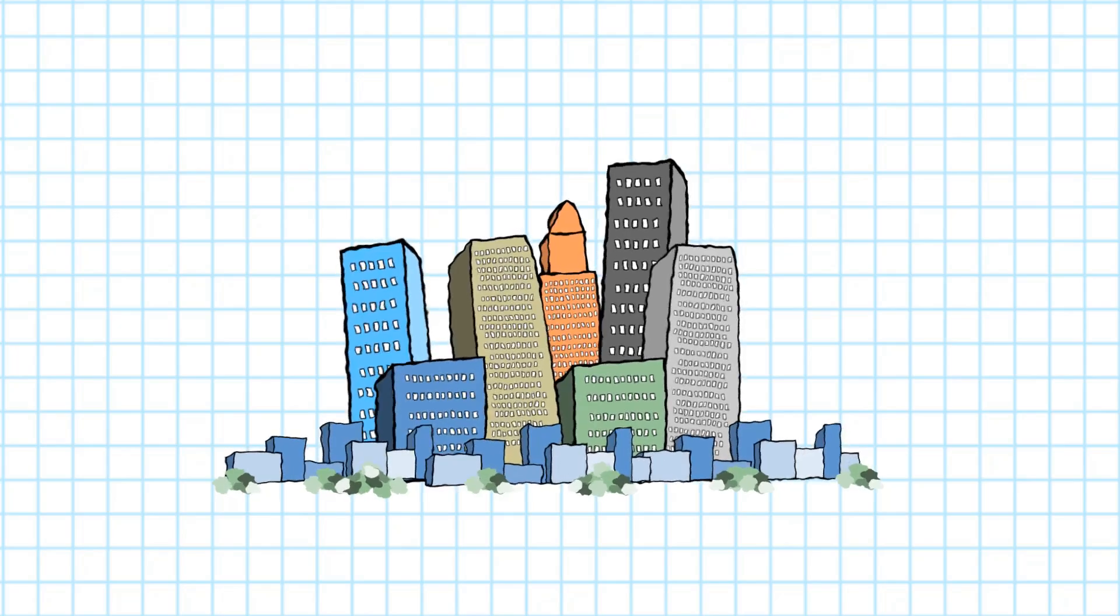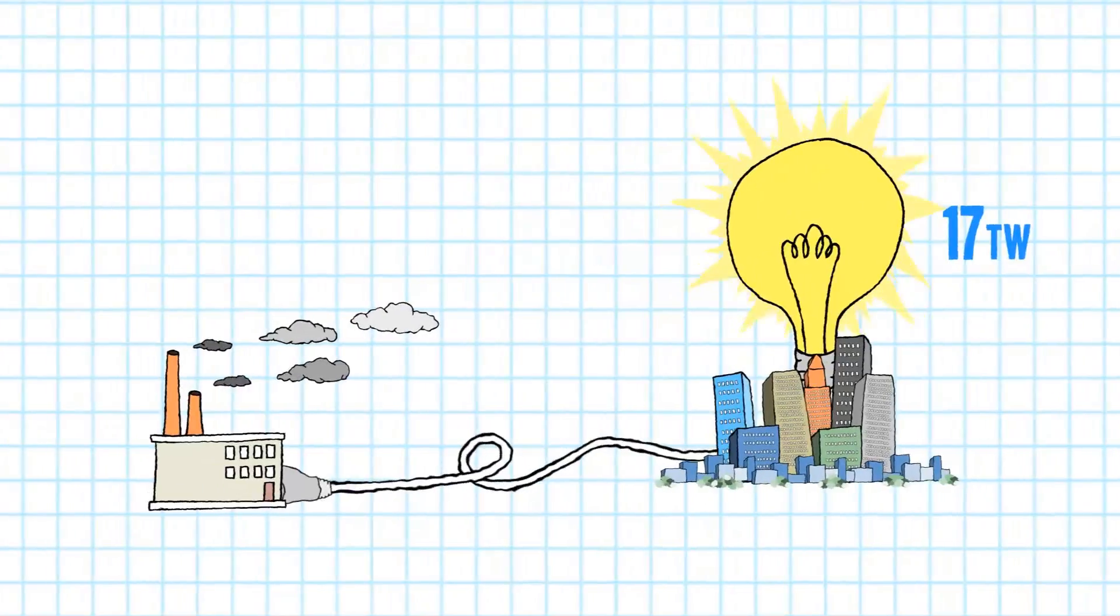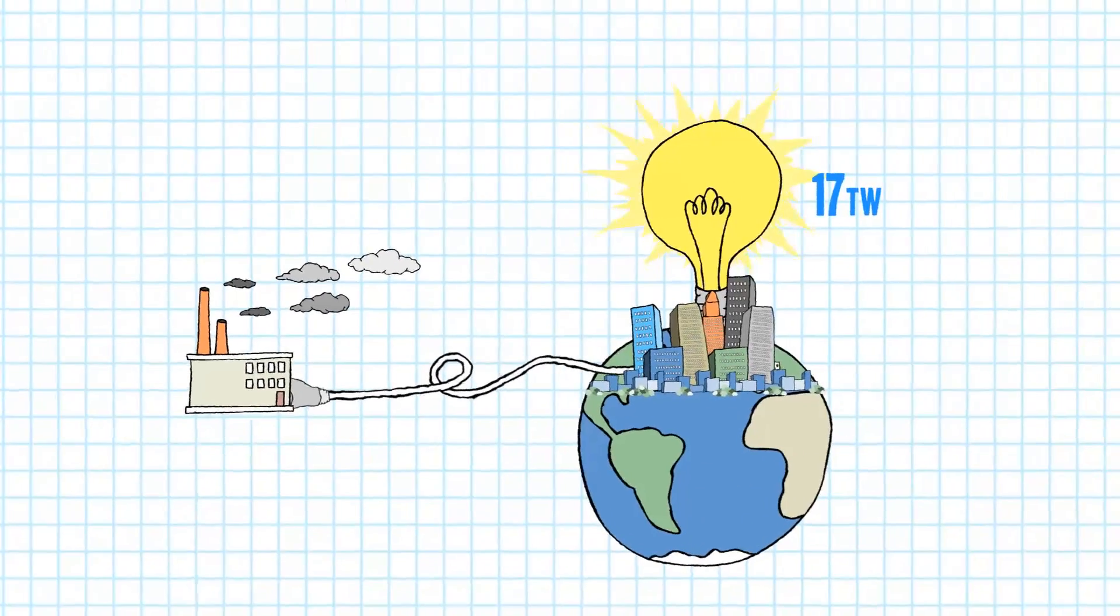In the simplest terms, modern civilization is basically a 17 terawatt light bulb plugged into a coal power plant. But not everyone on Earth is plugged in yet.